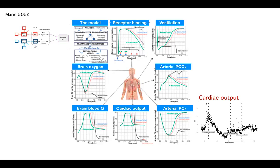We started to understand that the effect of opioids on ventilatory control is not the most important thing. It is the first step, because when you're ventilatory depressed, you become asphyxic. Your CO2 rises and your O2 goes down. And there are two components that have a detrimental effect on cardiac output.